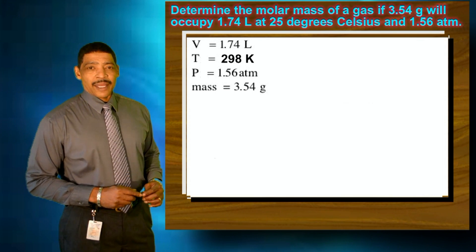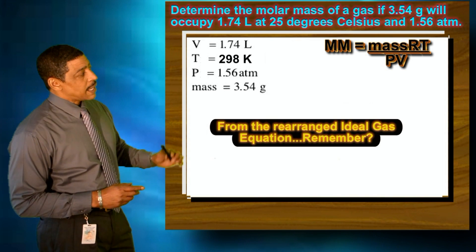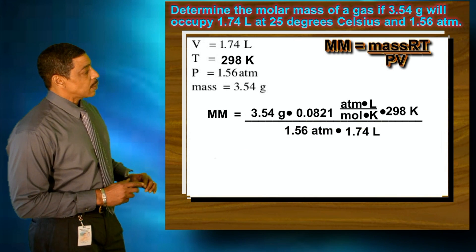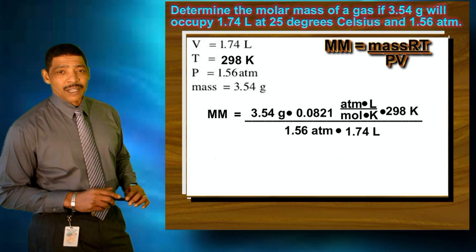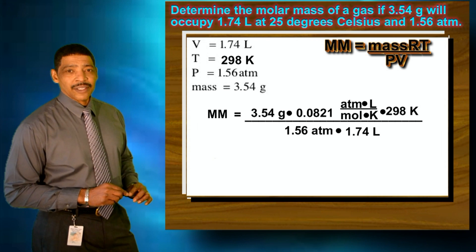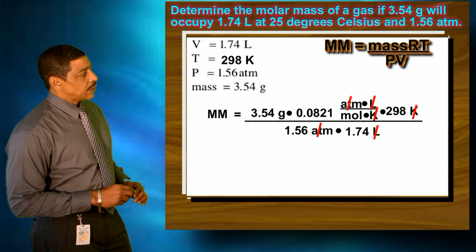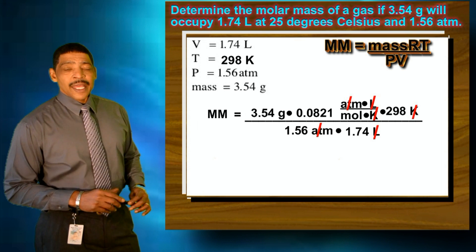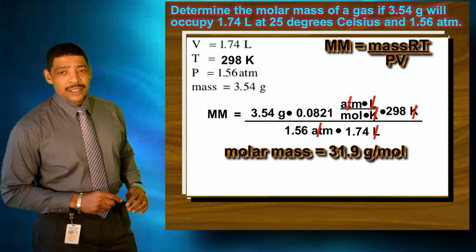To determine the molar mass of this particular gas, we use the modified equation where molar mass is equal to the mass times R times T divided by P times V. Inserting the data, molar mass will equal 3.54 grams times 0.0821 atm·L/(mol·K) times 298 K, divided by 1.56 atm times 1.74 liters. The atmospheres, liters, and K will cancel, leaving us with units of grams per mole. The final answer is that the molar mass of this particular gas will be 31.9 grams per mole.